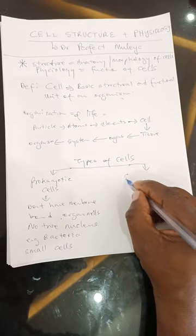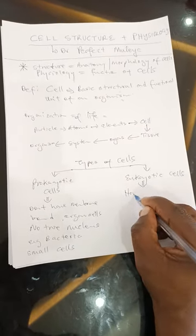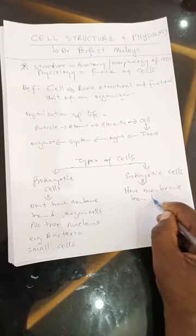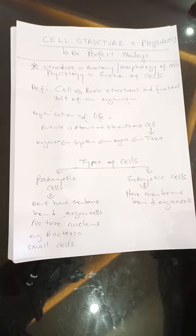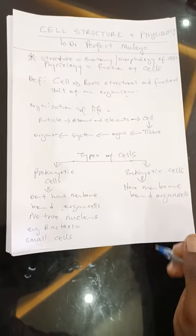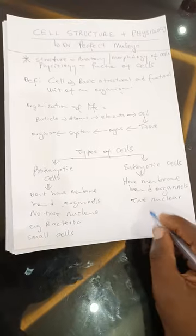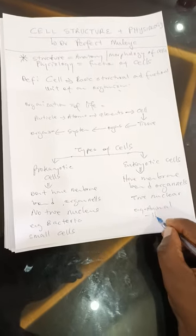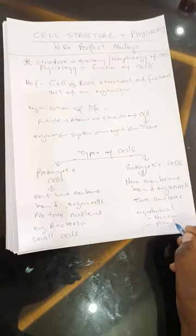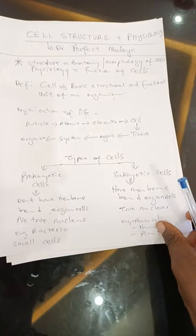There are also larger cells called eukaryotic cells. These have membrane-bound organelles such as mitochondria, true nucleus, Golgi apparatus, etc. They also have a true nucleus containing genetic material. Examples are animal cells, human cells, and plant cells — all of those are eukaryotic cells.